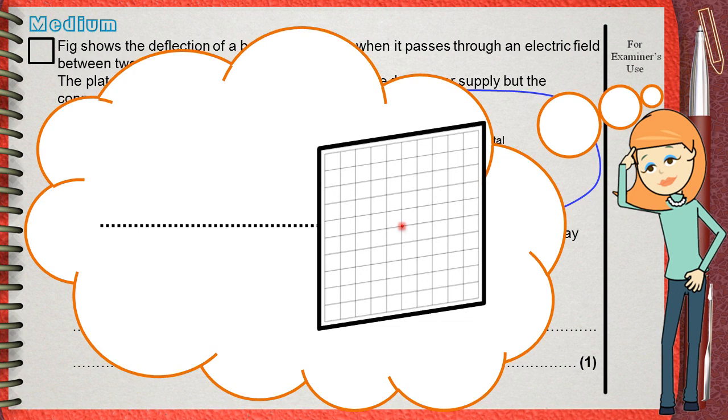In this question, he asks about how you can make the spot move up and down the screen, just as you see.